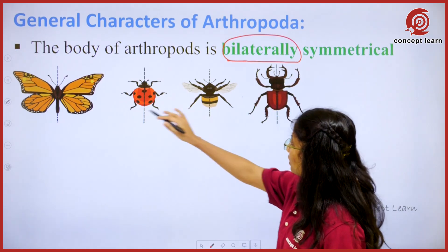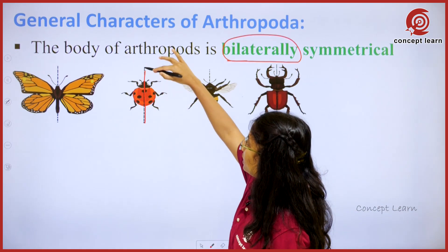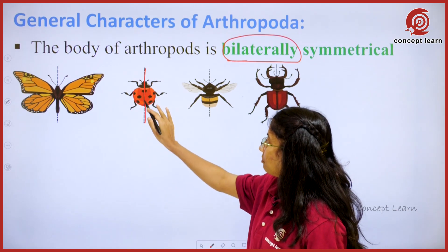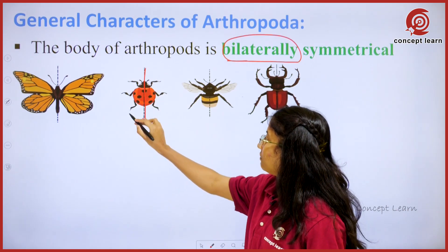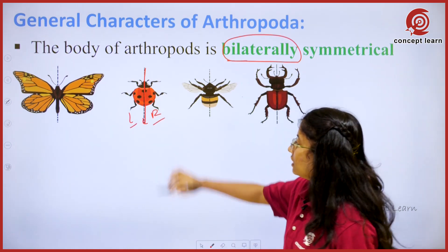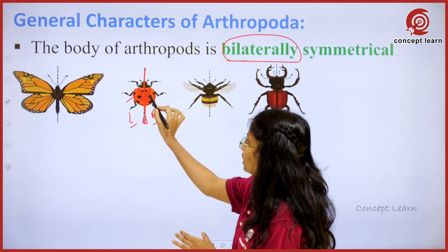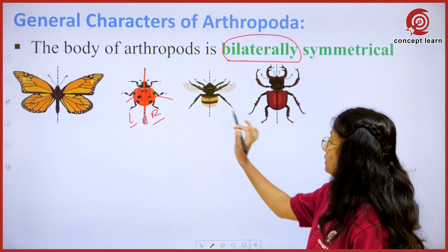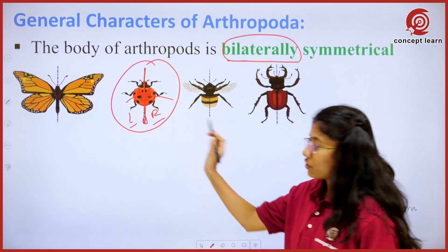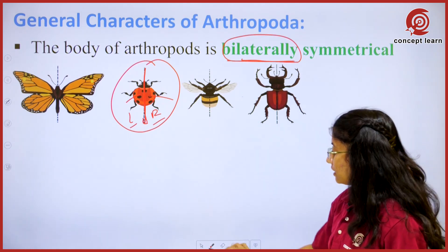Whichever insect you take, if a medial line passes through the center of the body, it will be divided into two equal halves — towards its left and right. Whatever is divided in between creates two equal body parts, and this type of resemblance in insects is called bilateral symmetry.